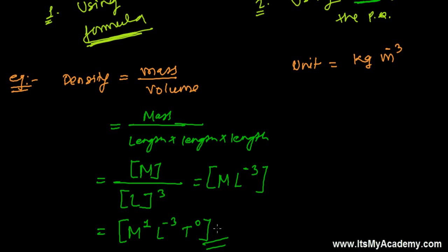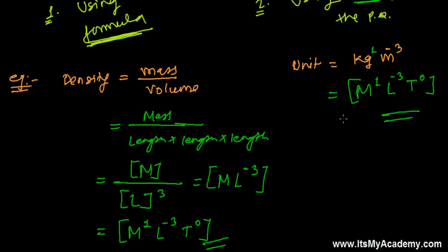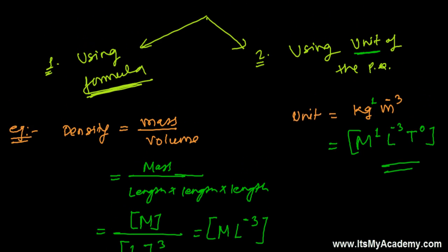So what is the dimensional formula of density? It's ML⁻³T⁰. And now using the unit method: kg always represents mass, so let's write M to the power one. Meter is the unit of length, so length has power minus three. And time is zero. So that's how easy it is — using unit is always an easier and faster method.